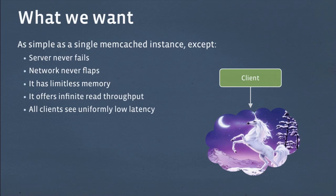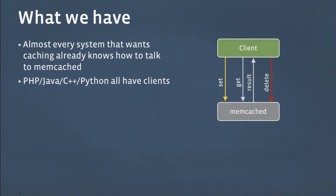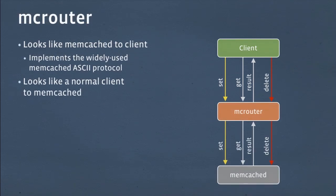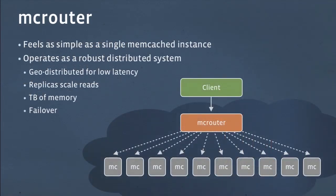What we want is a service that you can talk to like it's just a single Memcached box, but the server will never fail, the network will never flap, you'll have limitless memory, infinite read throughput. This is the mythical unicorn. But we have clients that just know how to talk to Memcached, so we put in McRouter. To a client, it looks just like a normal Memcached box — it implements the widely understood Memcached ASCII protocol. To Memcached, it looks like another client. What's actually going on is McRouter can talk to many Memcached boxes in the background, operating as a robust distributed system: geo-distributed for low latency, replica-scale reads, access to terabytes of memory, and failover.